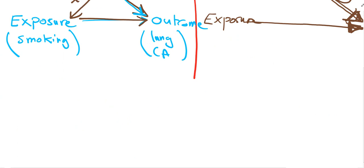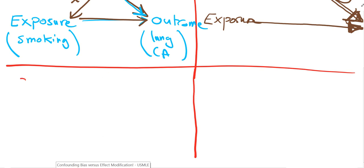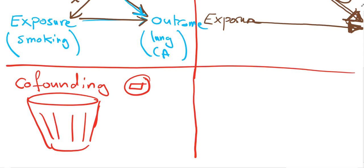Another very important point you need to remember: a confounding factor is a nuisance factor, a nasty or disturbing factor that I need to get rid of. It's affecting my study, disturbing my study — I don't want it. I have to figure out these confounding factors, get rid of them, or at least know they're there. We need to find and eliminate the confounding factor. It's alarming — we need to put it in the garbage.